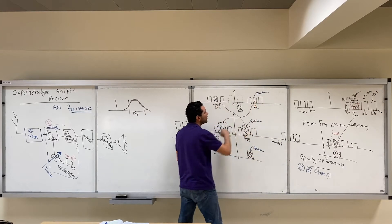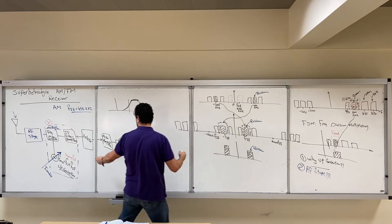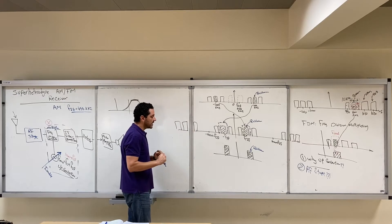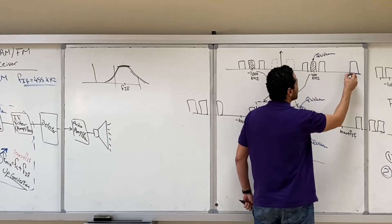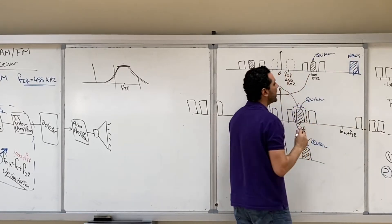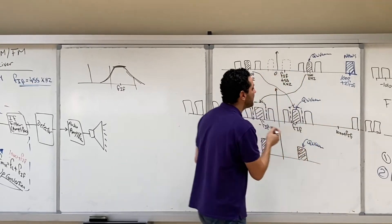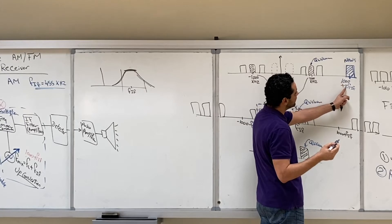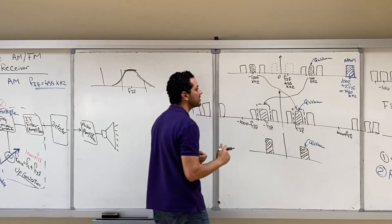We discussed the case where we want to listen to the Quran channel which exists at 1000 kHz, and we said that we are going to mix with 1000 kHz plus FIF, shifting to the right around 1000 kHz plus FIF and to the left around negative 1000 kHz minus FIF. Now the problem is: consider that we have another channel — a news channel — that exists exactly at 1000 plus 2×FIF. Since FIF is 455 kHz in AM, that would be 1000 plus 2×455 = 1910 kHz.